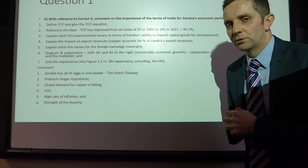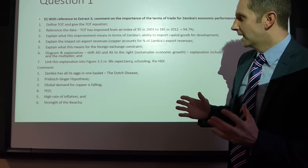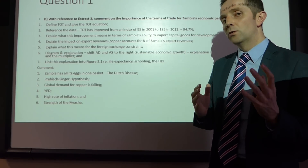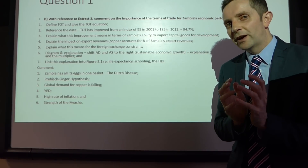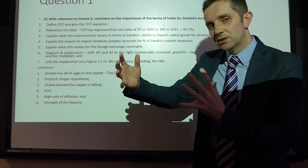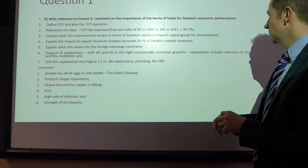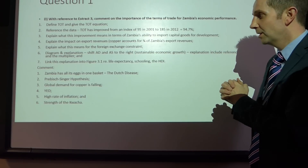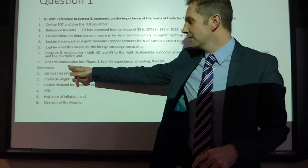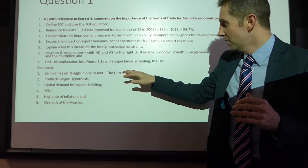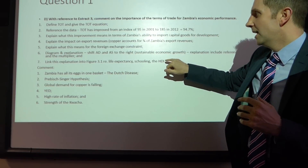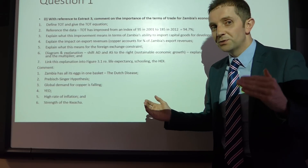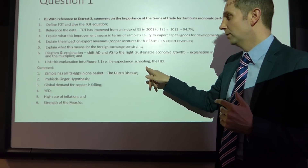On your diagram you should be shifting AD and AS to the right, which is referred to as sustainable economic growth. When explaining why AD and AS shift right: bringing in more capital goods means more investment, which shifts AD, but also has a double-whammy effect of increasing productive capacity so AS shifts right too. Feel free to reference the multiplier and accelerator theories. Link this into Figure 3.1 on life expectancy, schooling, and HDI — when the economy is growing this way, more funds can be channelled into those areas.